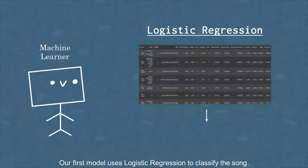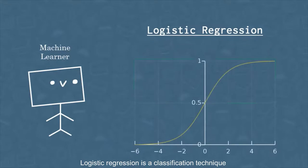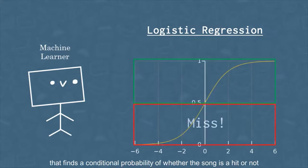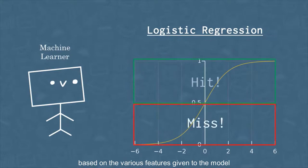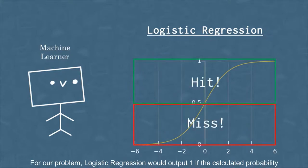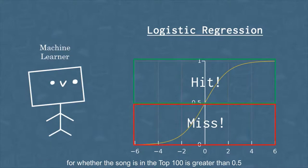Our first model uses logistic regression to classify the song. Logistic regression is a classification technique that finds the conditional probability of whether the song is a hit or not based on the various features given into the model. For our problem, logistic regression will output 1 if the calculated probability for whether the song is in the Top 100 is greater than 0.5 and 0 otherwise.